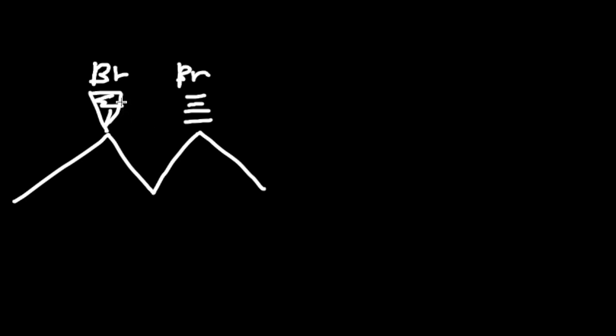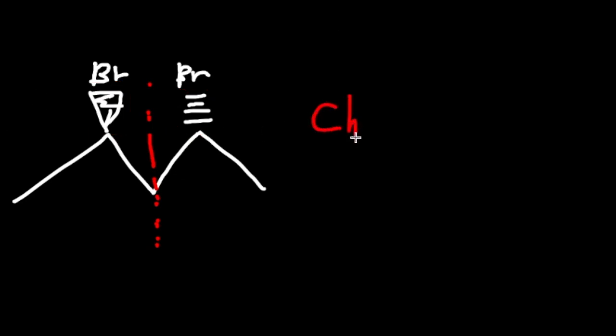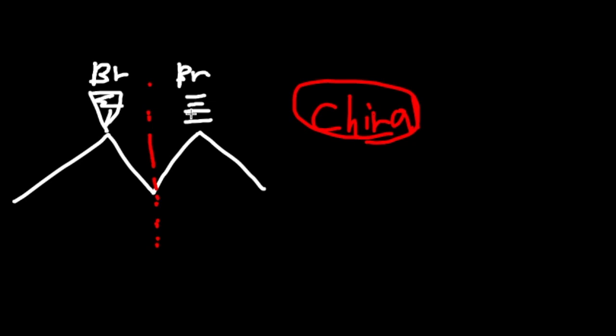For this next example, we have a wedge and a dash. Is it a chiral or achiral molecule? We draw the line of symmetry and can see the left and right sides are equally cut in half, but now we have a wedge on one side and a dash on the other. These two are different, so this makes it chiral — not achiral — because there's a wedge and a dash, two different things. And again, we have two chiral centers.